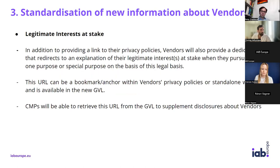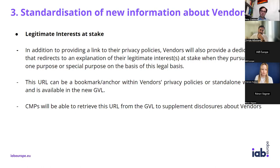The GDPR requires data controllers to provide information about the legitimate interests they pursue, and the new policies aim to make this information more easily accessible by users. Therefore, in addition to providing a link to their privacy policies, vendors will also provide a dedicated link that redirects to an explanation of their legitimate interests at stake when they pursue at least one purpose or special purpose under this legal base. This URL can be a bookmark anchored within vendors' privacy policies or a standalone webpage, and CMPs will be able to retrieve this URL from the GVL to supplement disclosures about vendors.